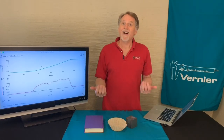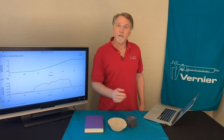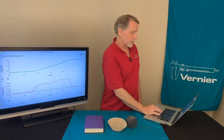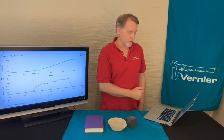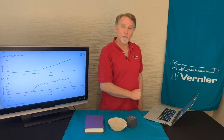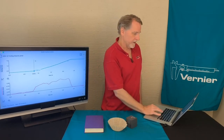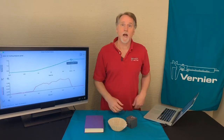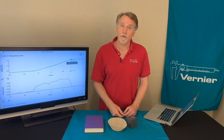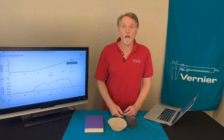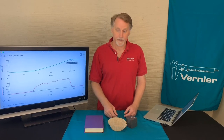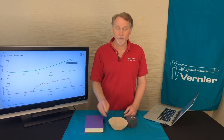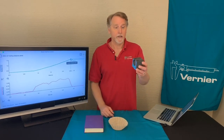We need to find that time difference, and it's really easy to do with the software. We can use what's called the examine function — clicking there tells me the time when it was initially dropped, which is 0.85 seconds, and then clicking over at that point gives me the time that the object actually hit the floor. So in this lab you're analyzing motion by dropping objects — a coffee filter and a book — using the motion detector.